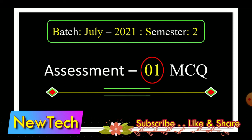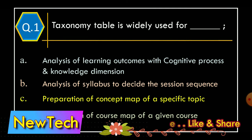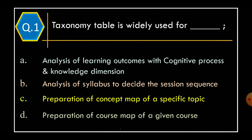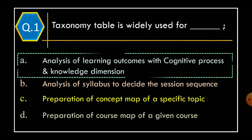Assessment 1, MCQs. Q1: Taxonomy table is widely used for — Option A: Analysis of Learning Outcomes with Cognitive Process and Knowledge Dimension; Option B: Analysis of Syllabus to Decide the Session Sequence; Option C: Preparation of Concept Map of a Specific Topic; Option D: Preparation of Course Map of a Given Course. The correct option is Option A: Analysis of Learning Outcomes with Cognitive Process and Knowledge Dimension.